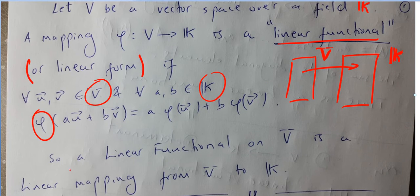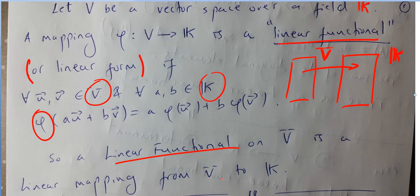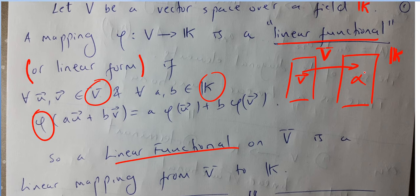So the definition is: a linear functional on V is a linear mapping from V to K. You're not taking from vectors to vectors — you're taking from vectors to the members of the field. That is the linear functional.